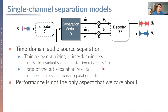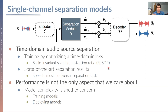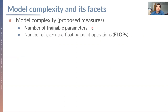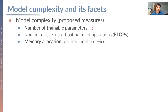But performance is not the only aspect we should care about — model complexity is another big concern for training or deploying models. Model complexity has multiple aspects: first, the number of trainable parameters or the number of executed floating-point operations. Also, intermediate representations and the model itself need storage space, so memory allocation is a big issue. Finally, the time for completing each process and running the model is also a concern.